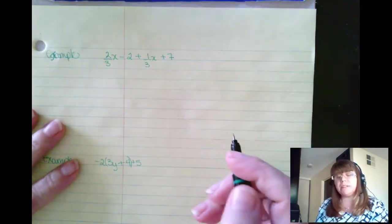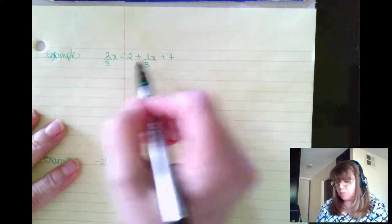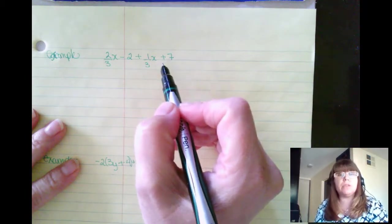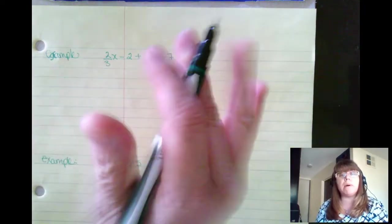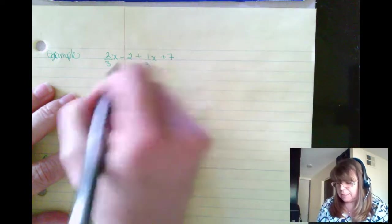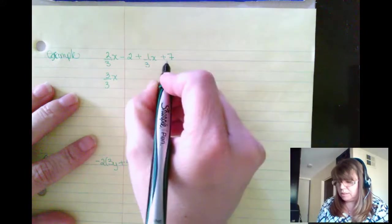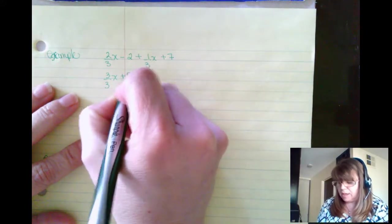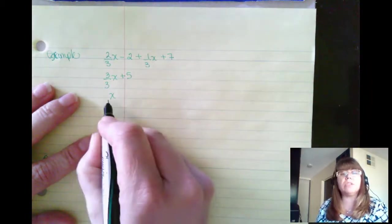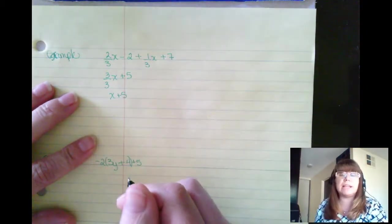Now let's work through a couple examples. So I have 2 thirds x minus 2 plus 1 third x plus 7. Now this doesn't have any distributive rule, but I can combine like terms. So I have 2 thirds x plus 1 third x is 3 thirds of x. A negative 2 plus a positive 7 is plus 5. But 3 thirds is really 1, and of course we just imply a 1 in front of the x. And our final answer here is x plus 5.